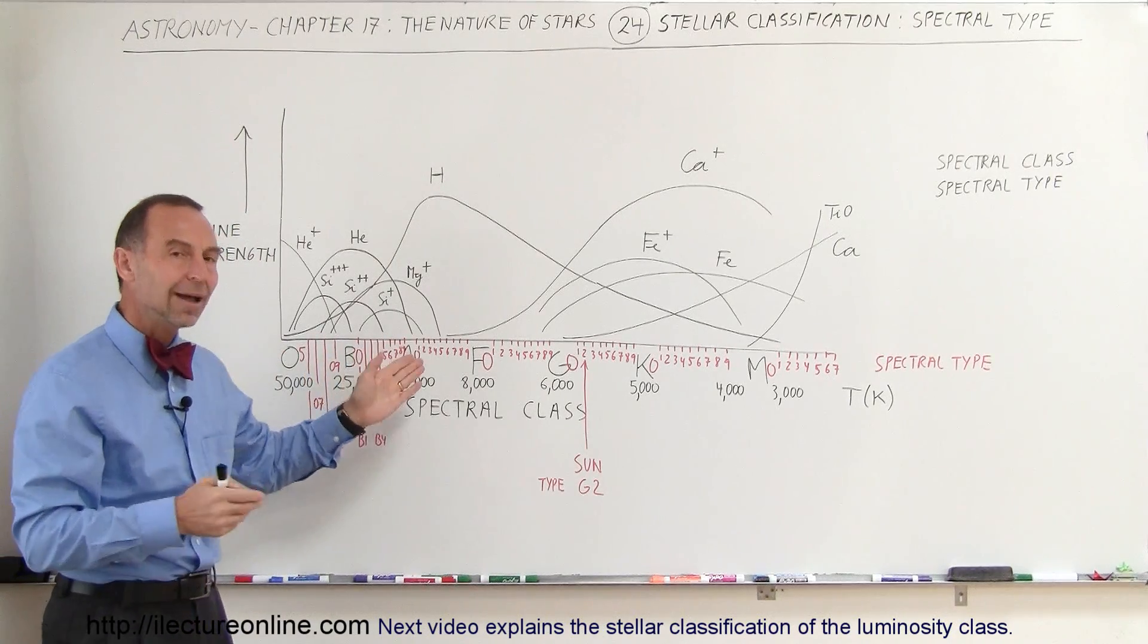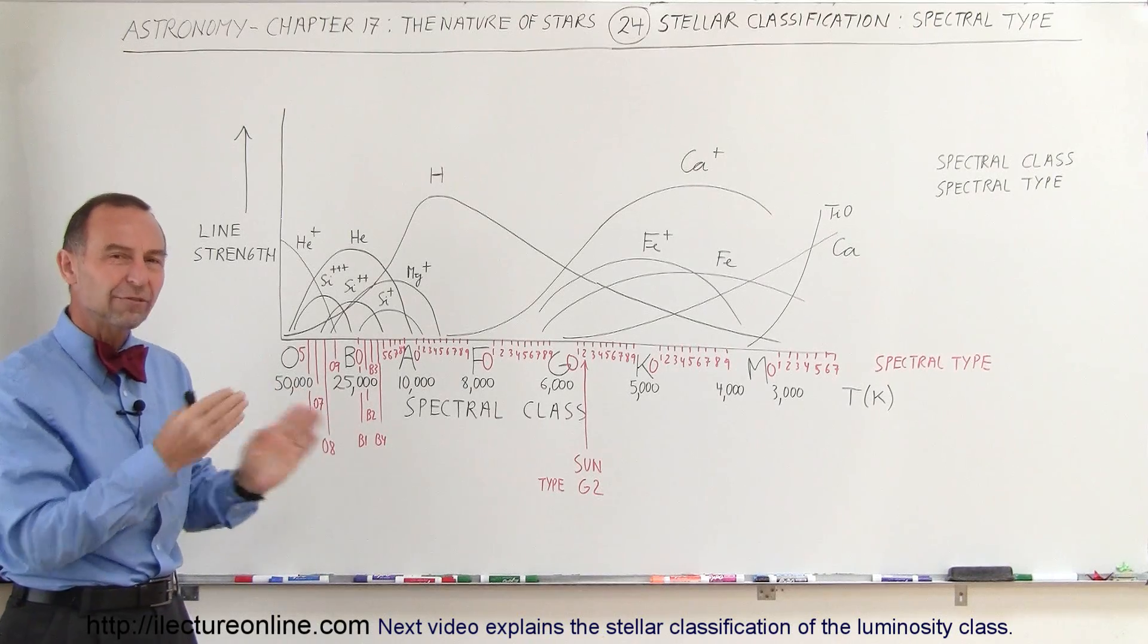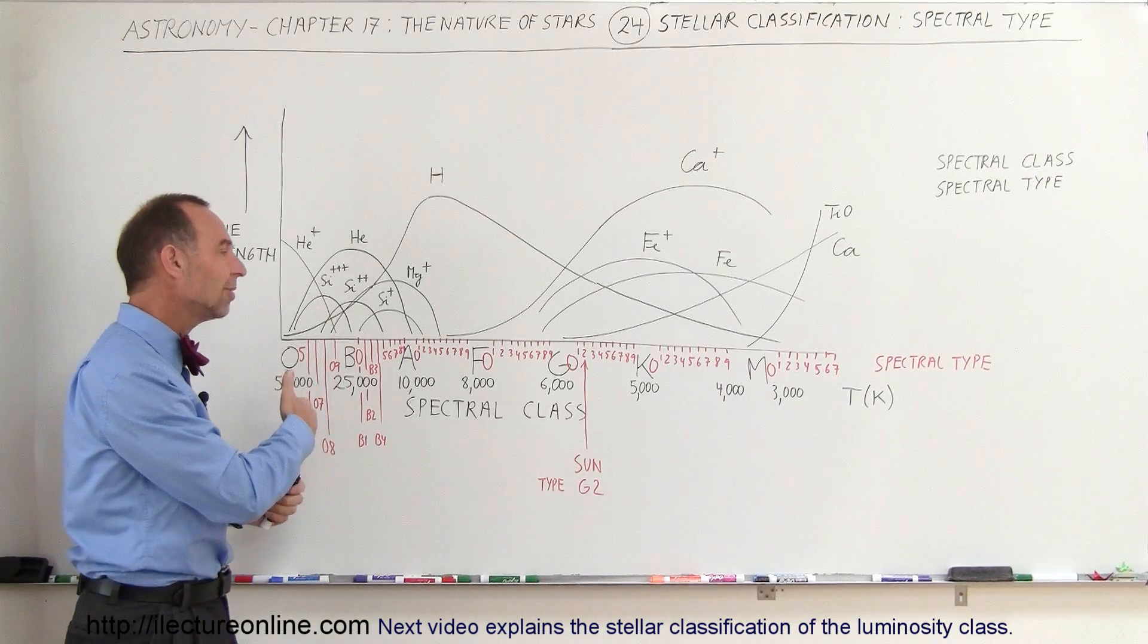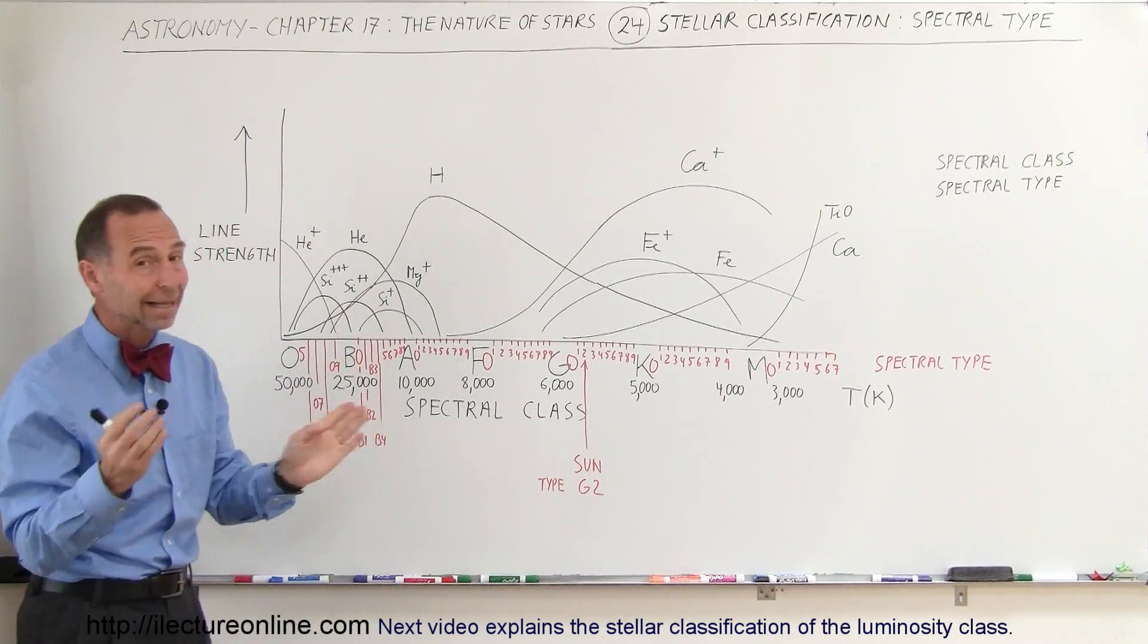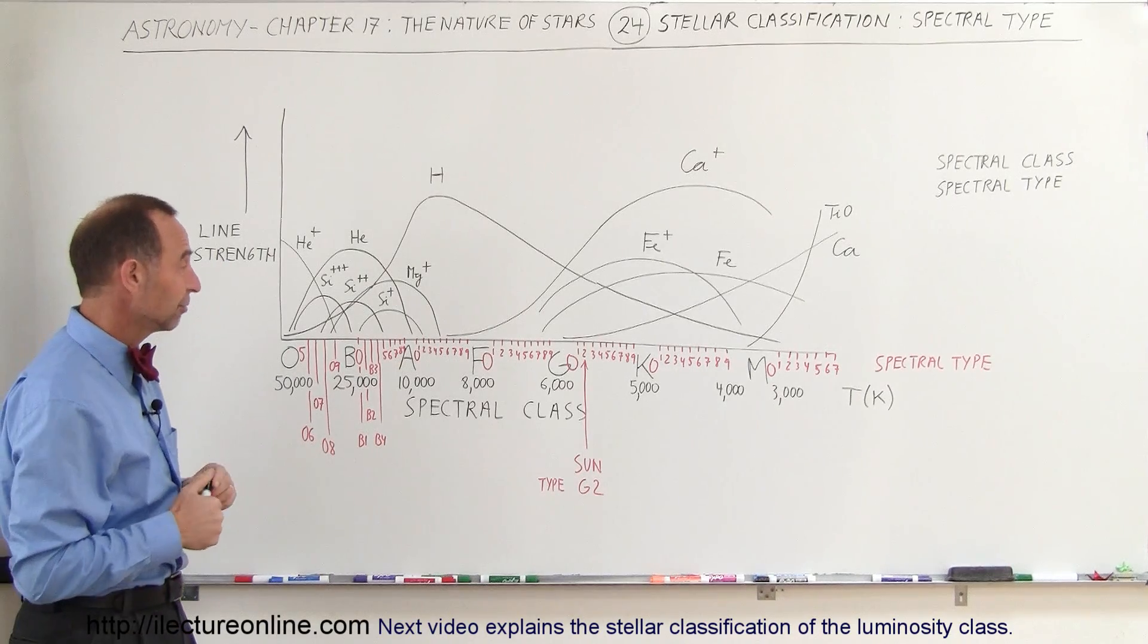Those subtypes are called stellar types. So that's where the difference comes in between stellar class and stellar type. Again, it's often used interchangeably, unfortunately.